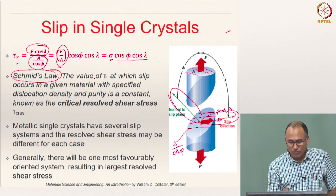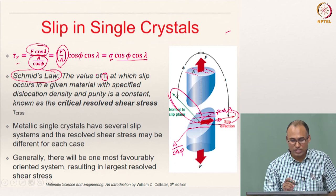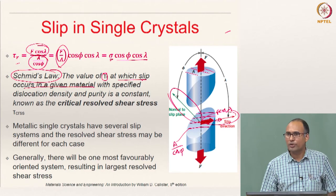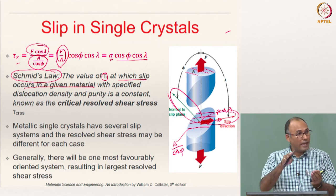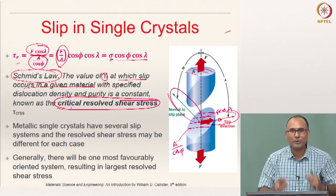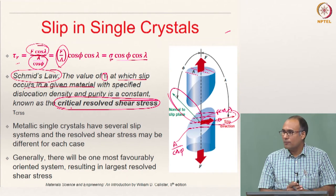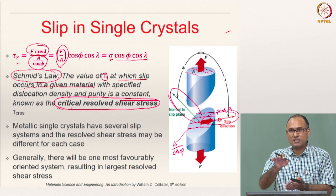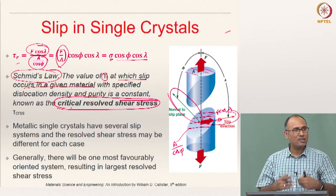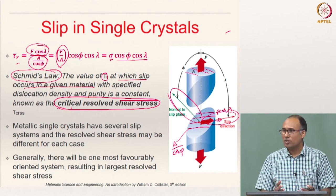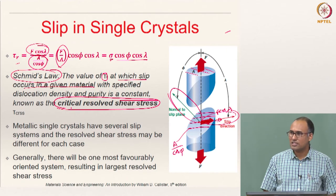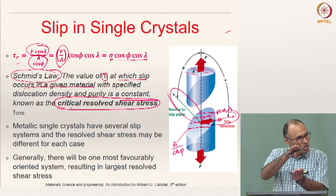Schmid's law states that the critical resolved shear stress tau_r — the value at which slip occurs in a given material with a specified dislocation density and purity — is a material property. For any crystalline material, the critical resolved shear stress is the shear stress at which yielding occurs, analogous to yield strength, but expressed in terms of shear stress since it is shear that actually causes slip.